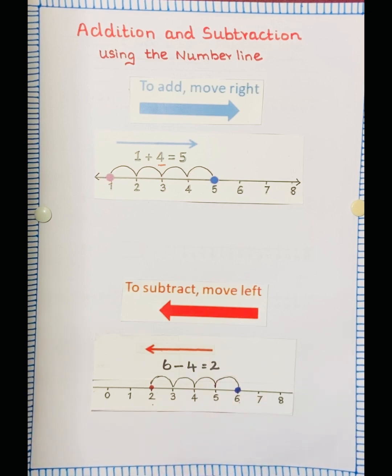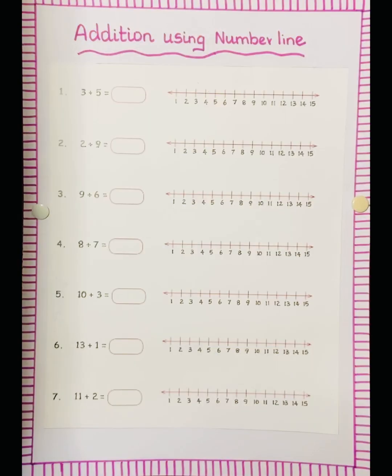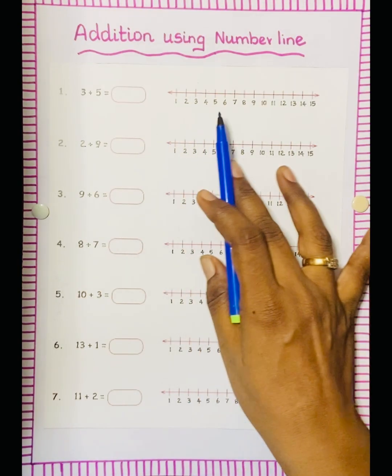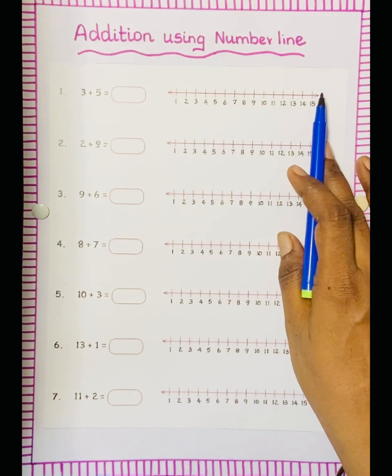Is it clear for you? Let's see some examples. Addition using the number line.